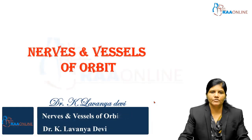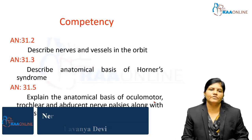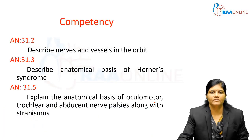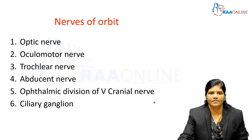Welcome to RAW Online. Today's topic of discussion is nerves and vessels of orbit. The competencies of the topic are: describe the nerves and vessels in the orbit, describe the anatomical basis of Horner's syndrome, and explain the anatomical basis of oculomotor, trochlear, and abducent nerve palsies along with strabismus. The nerves of the orbit are the optic nerve, oculomotor nerve, trochlear nerve, abducent nerve, and ophthalmic division of the trigeminal nerve, as well as the ciliary ganglion.